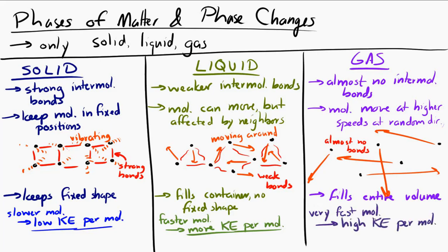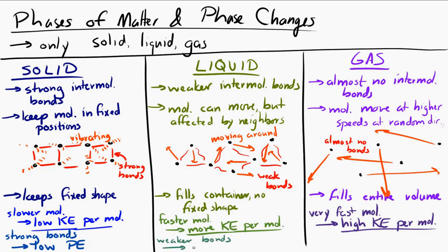Now let's think about potential energy, which is related to the bonds. In a solid, the bonds are very strong, which means there is low potential energy — the solid is in a low energy state, everything is fixed. When we move to a liquid, there's more potential energy because the bonds are weaker. And then in a gas, there are almost no bonds, so there's an even higher potential energy.